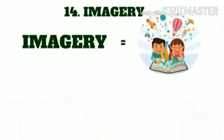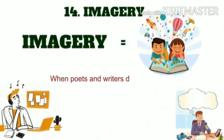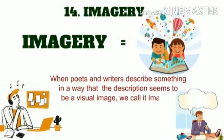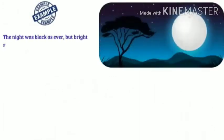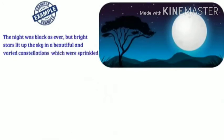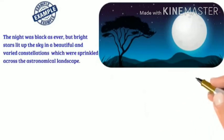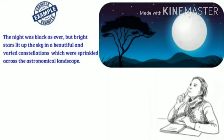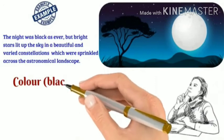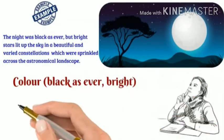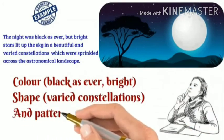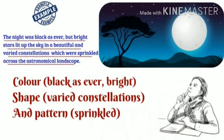Imagery. The word imagery is associated with mental picture. In literature, when poets and writers describe something in a way that the description seems to be a visual image, we call it imagery. Example: 'The night was black as ever, but bright stars lit up the sky in a beautiful and varied constellation, which were sprinkled across the astronomical landscape.' The experience of the night is described in depth with color — black as ever, bright — shape — varied constellations — and pattern — sprinkled. So it's a perfect example of imagery.